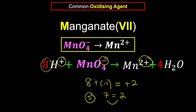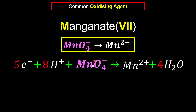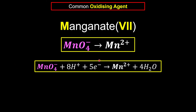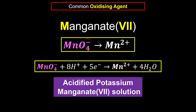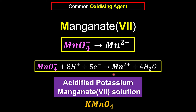We add 5 electrons to the left side (more positive side) to balance the charges. After rearranging, we are done balancing the half equation. After the reaction, permanganate(VII), which is purple, changes to become colorless. One common compound is acidified potassium permanganate(VII) solution. Adding 1 potassium ion (K⁺) cancels the −1 charge, giving the formula KMnO₄.